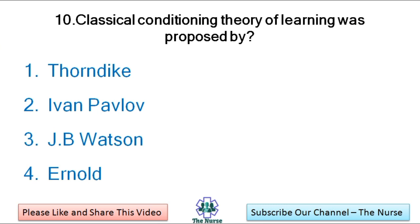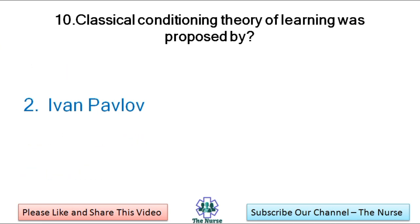Next question: Classical Conditioning Theory of Learning was proposed by — Thorndike, Ivan Pavlov, JB Watson, Arnold. Correct answer: Ivan Pavlov.